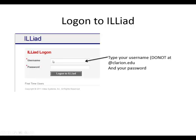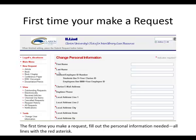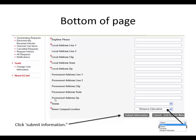You're going to get the ILLiad logon screen. Put your username in — you don't have to add @clarion.edu, it's already there. Then enter your password and click Logon. The first time you do this, you'll need to fill in your first name, last name, and anything with a red asterisk. You'll need your student ID number, your Clarion email address, and your local address. This tells the interlibrary loan staff where to send your information.